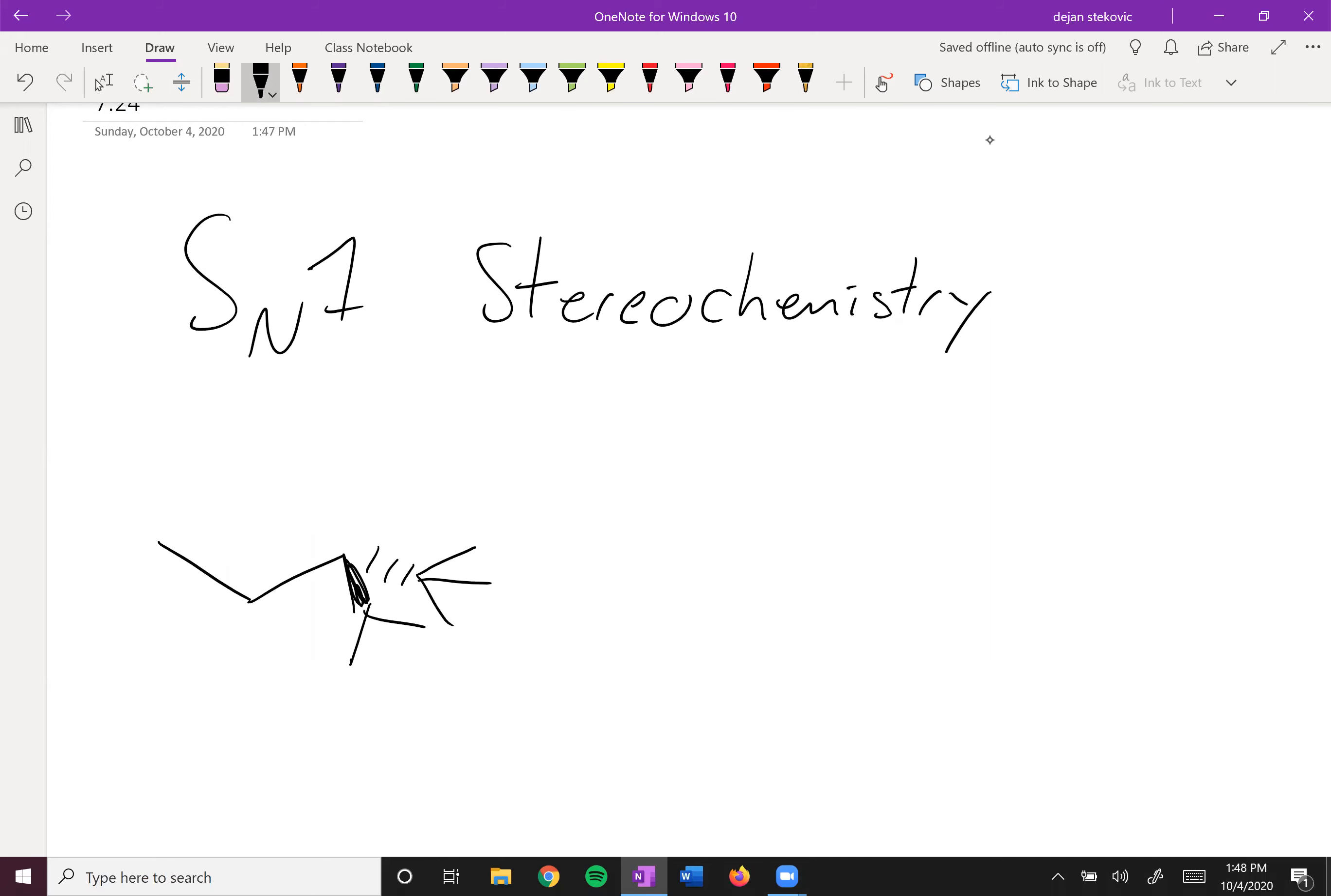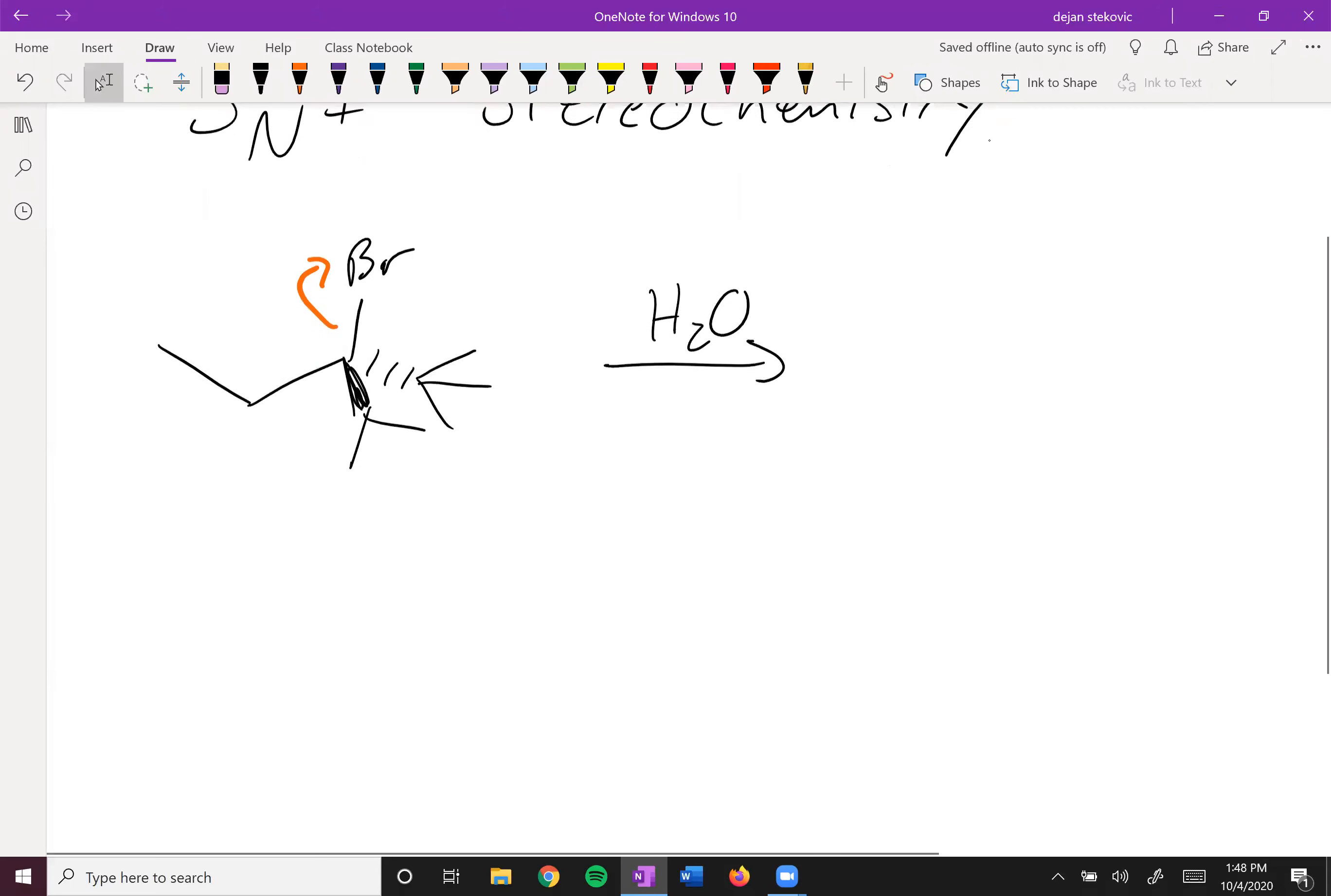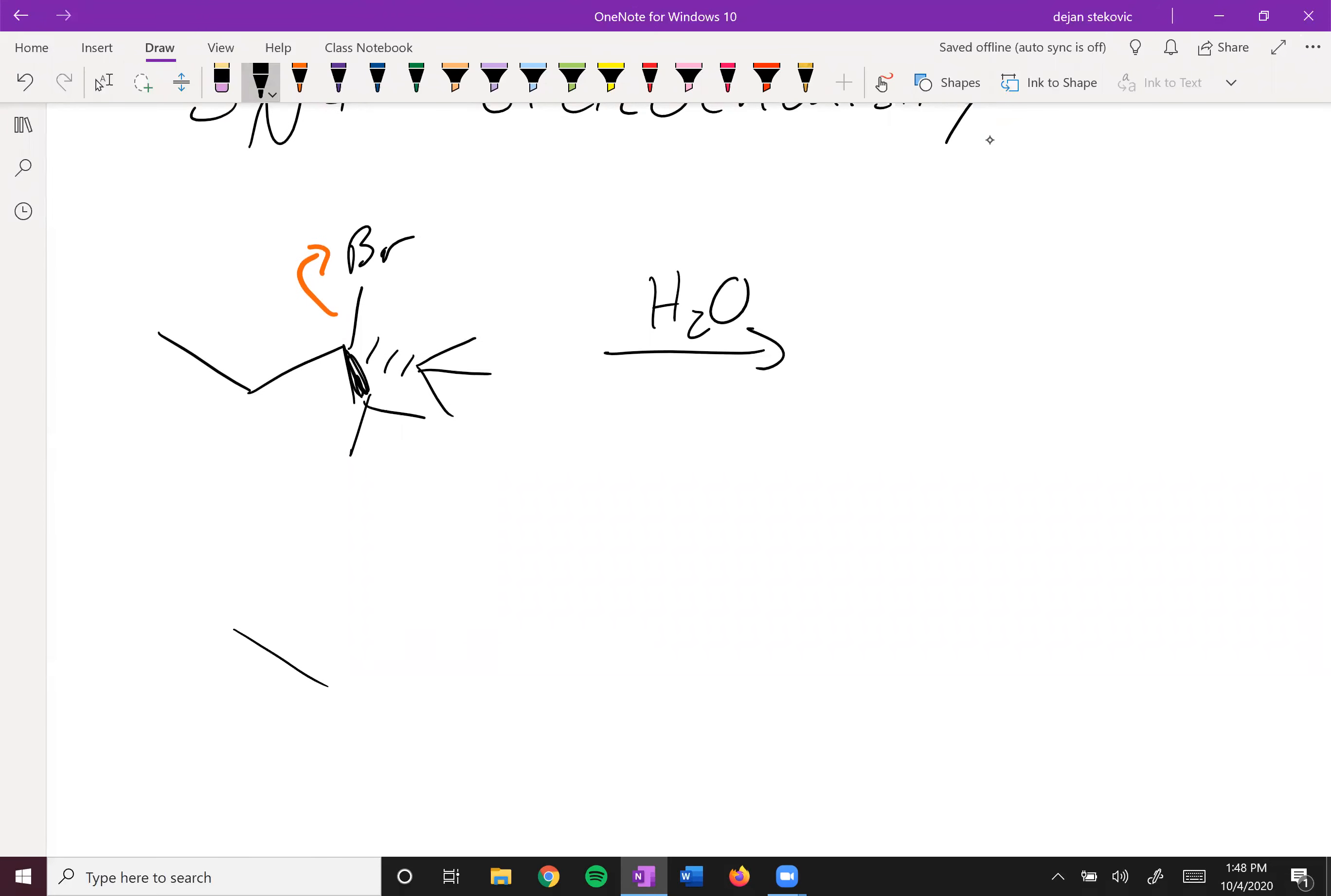Let's think about what occurs here. So we've got a stereocenter over here, where we've got an ethyl group, an isopropyl group, and a tert-butyl group. And then we're going to put this in some water and have an SN1 reaction occur.